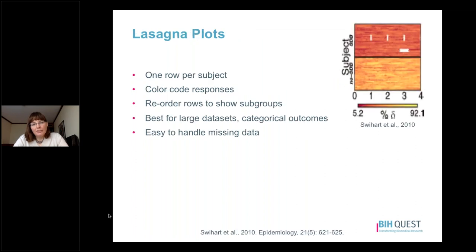A final strategy for showing longitudinal data at an individual level is the lasagna plot. Here, there is one row per subject, responses are color coded, and rows are reordered to show subgroups with particular patterns of responses or similar colors. This strategy works best for large data sets and categorical outcomes — if you're working with a continuous outcome you have to make it categorical and assign a color code to each category. It's also easy to handle missing data by simply leaving that space blank.